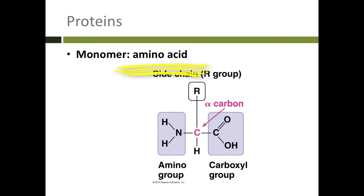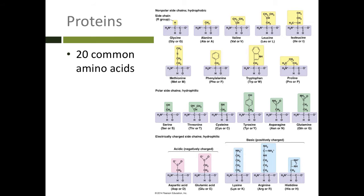The monomer for proteins is called an amino acid. All amino acids have this basic structure. They have an alpha carbon. On the left side, they have an amino group, and on the right side, they have a carboxyl group. They're attached to a hydrogen, and then they have a side chain labeled the R group. That's different in every amino acid. All amino acids are exactly the same on the bottom part. The only thing that's different between them is the R group, and there are 20 common amino acids.